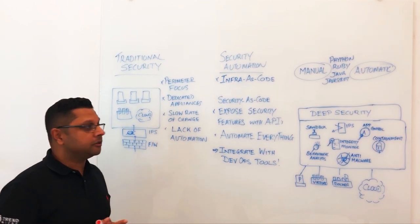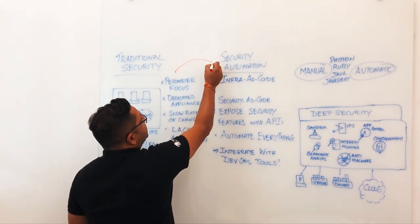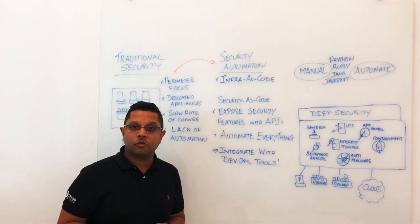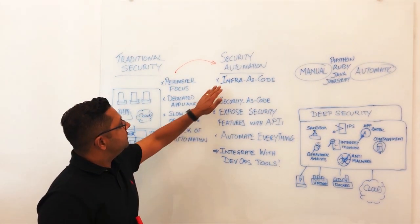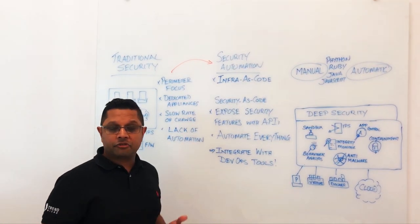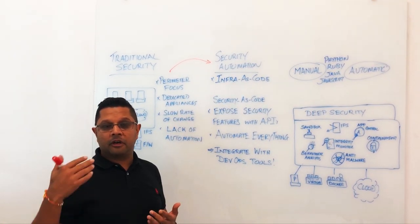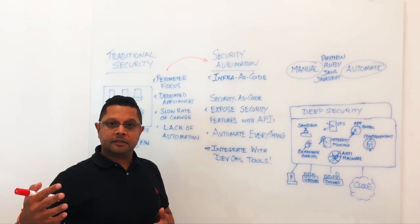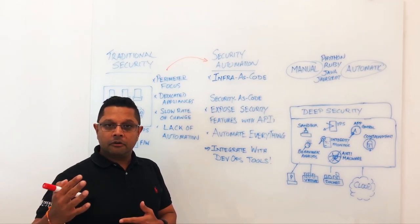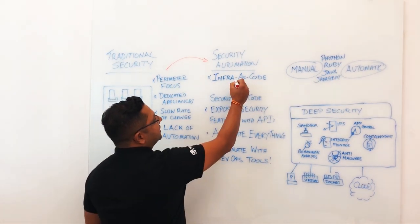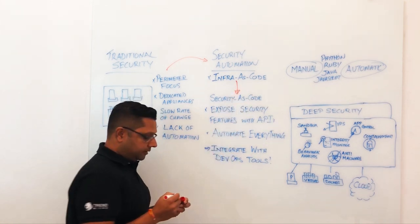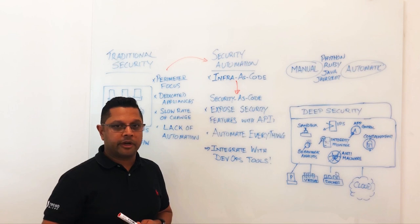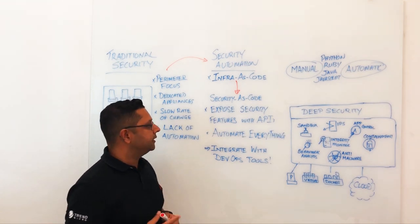So what do we need to do? We really need to change our thinking and think about security automation. We already have infrastructure as code, whereby we define our virtual machines, our application stacks, our identity and access as code. We need to make that transition for security — we need to do security as code and define the stack and create the policies in the same way.